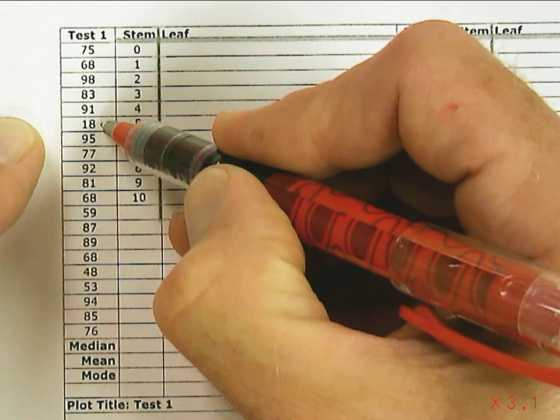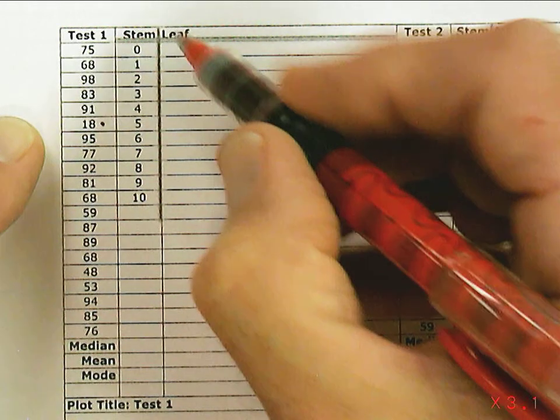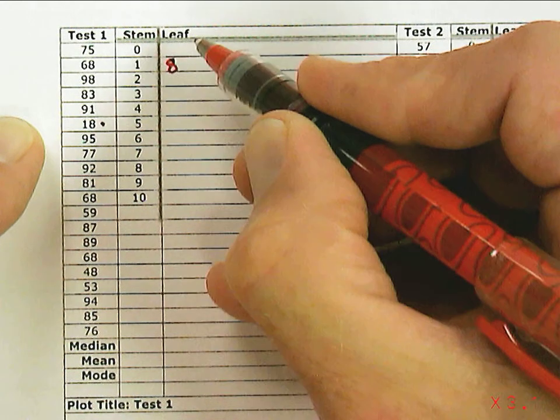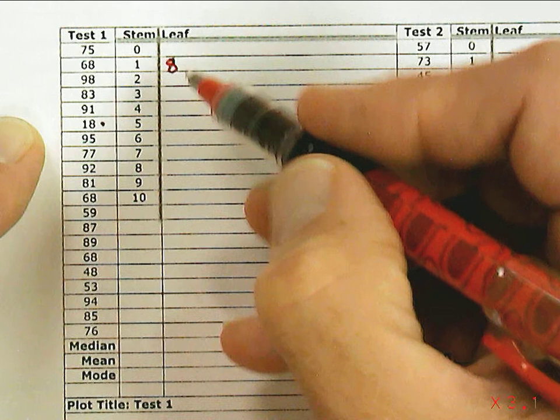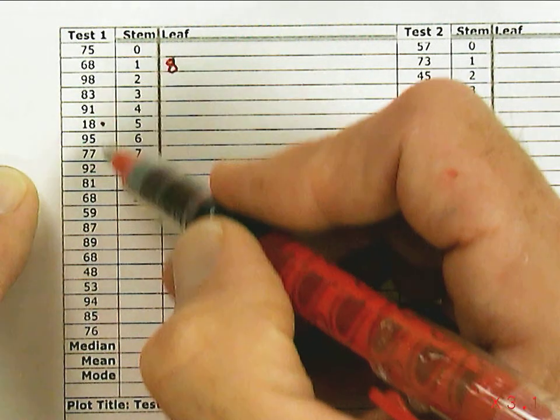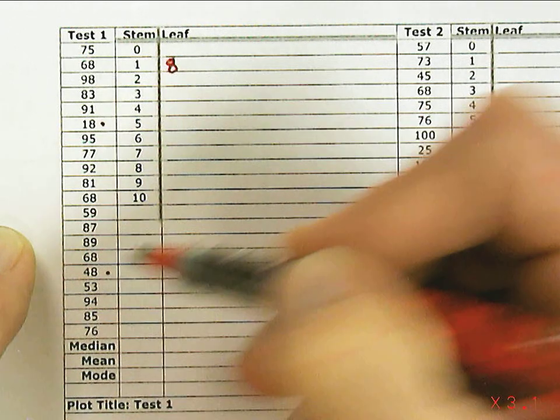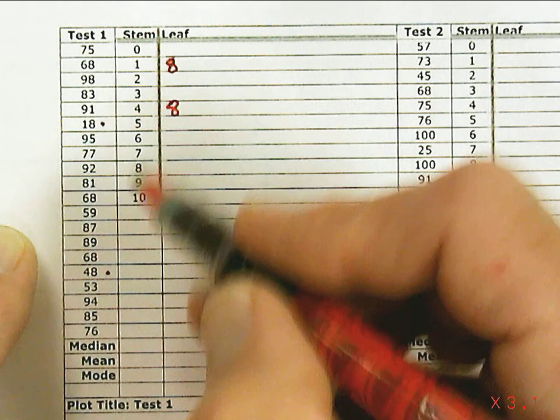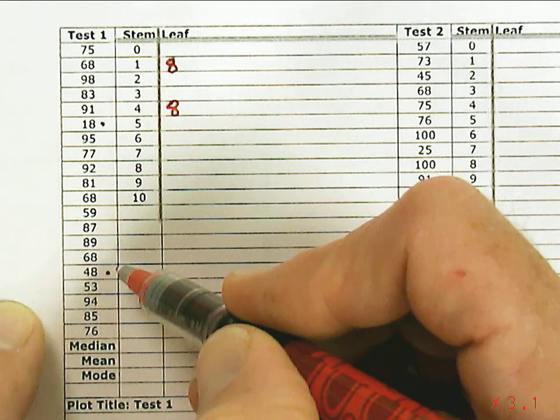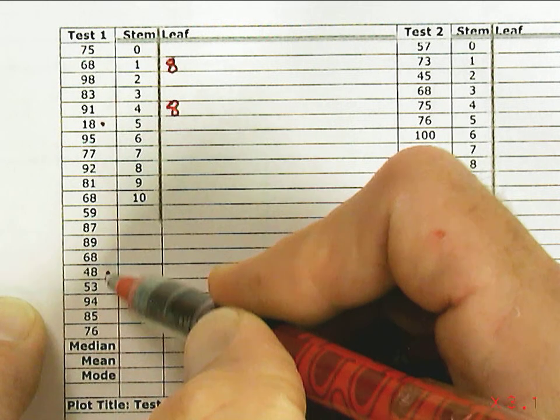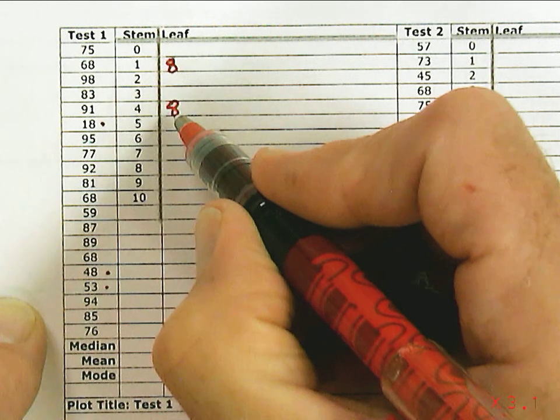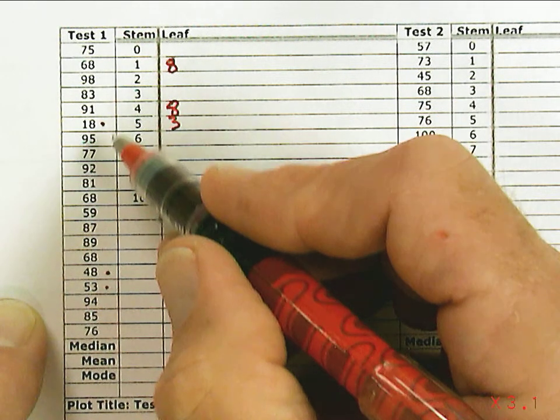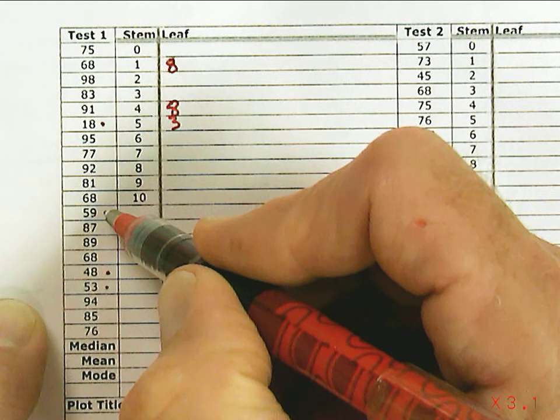I'm looking for the smallest number on the list, which is 18. I'm going to take that 18, it goes in the tens digit, the 1, and I write down the 8 for the ones digit in the leaf column. The next smallest number in the list is 48. So the 4 and then the 8 goes there in the leaf column. Then the next number is 53, and after that comes 59.